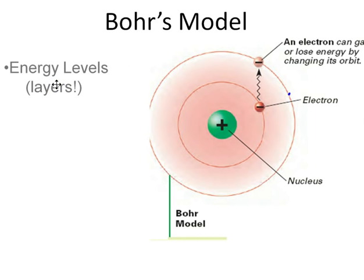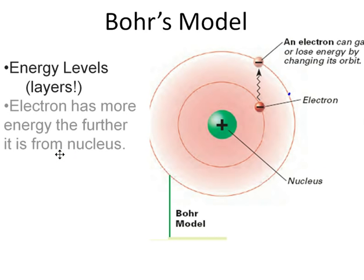So energy, Bohr's model is said to have energy levels, kind of like layers of an onion. And the electron has more energy the further it is from the nucleus. So this inner circular orbit is what we call ground state, the lowest energy level available. You should write down that definition. Ground state is when the electron is in the lowest energy level available.